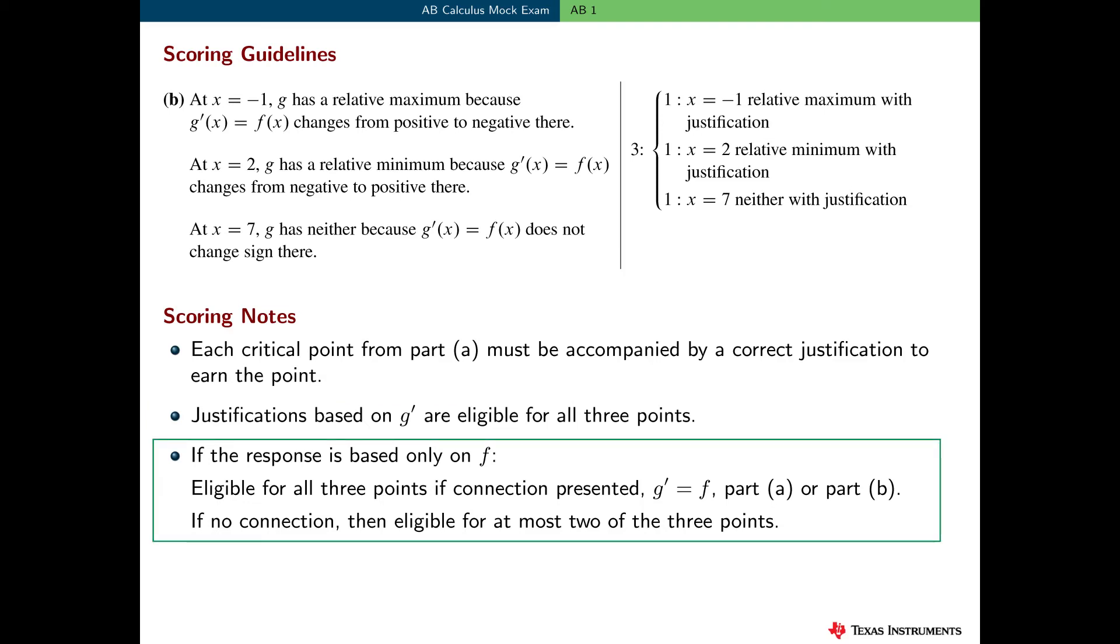However, if the response is based only on the function f, the student is still eligible for all three points, but only if they've made the connection that g prime is equal to f, somewhere in part a or part b. If no connection is presented, then the student can earn at most two of the three points.